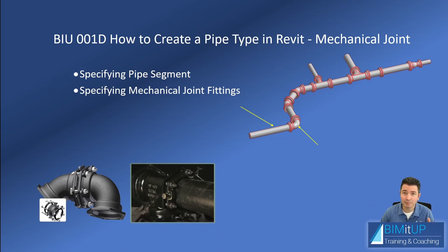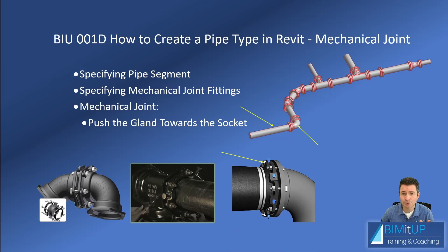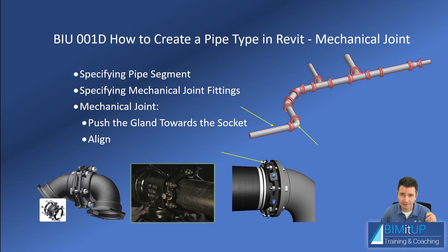This would be an example of a mechanical joint T. The important thing to note about mechanical joints is that you'll have a gland that you have to push towards the socket and then align it. It's pretty similar to a flange. If you haven't checked out our video on flange pipe types, go ahead and check it out — the link is in the description — and let's jump right into it.